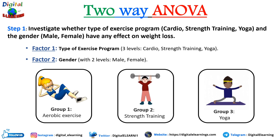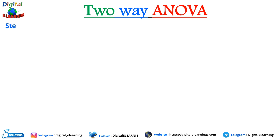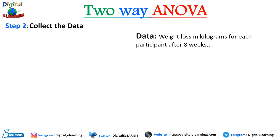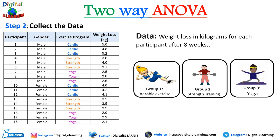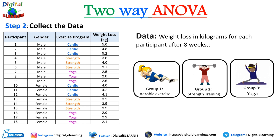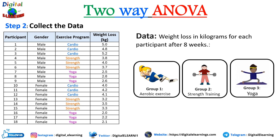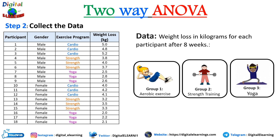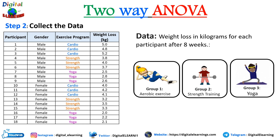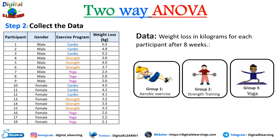In step two, we collect the data. We conduct an experiment where participants are randomly assigned to different exercise programs and their weight loss is measured after eight weeks. Group one is aerobics, group two is strength training, and group three is yoga. We will use this data to perform the two-way ANOVA.